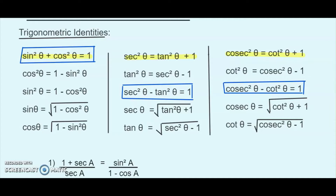In that scenario, what we do is solve the left hand side and bring it to a simpler form, then solve the right hand side and bring it to a simpler form, and check whether these two simplified forms are equal. If they are equal, then the proof is complete. There will also be more complex questions involving repetitive or multiple usage of different trigonometric identities in the same question.